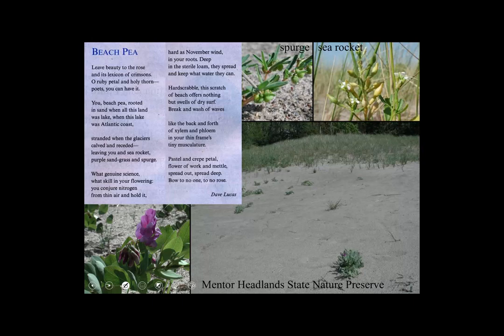Here's a poem about beach pea: 'Leave beauty to the rose and this lexicon of crimsons. O ruby petal and holy thorn, poets, you can have it. You, beach pea, rooted in sand when all this land was lake, when this lake was Atlantic coast. Stranded when the glaciers calved and receded. Leaving you and sea rocket — Cakile edentula, by the way, in the Brassicaceae — purple sand grass, Triplasis purpurea, and spurge, seaside spurge, Euphorbia polygonifolia. Nice plants. All of which you can see at Headlands Dunes State Nature Preserve.' But I digress.